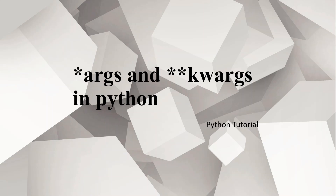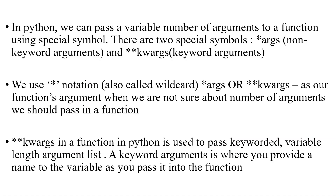Hello everyone, welcome back to another video. In this video we will discuss the difference between keyworded arguments and non-keyworded arguments. In Python, whenever we are not sure about the number of arguments we want to pass to a function, we use these special symbols. Non-keyworded arguments are denoted by a single star, and keyworded arguments are denoted by a double star.